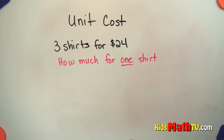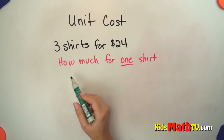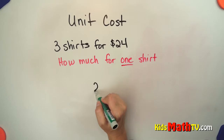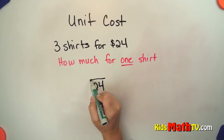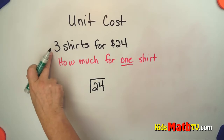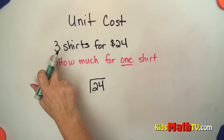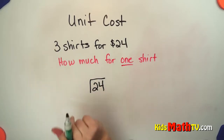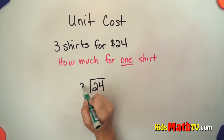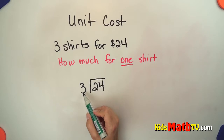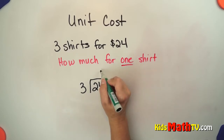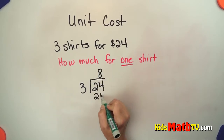In order to do that, you simply take your total — $24 for all of the shirts — and you're going to divide that by the number of shirts. You want to find out how much for each shirt, so divide it by three. Three shirts for $24. How many threes are in 24? There are eight. Eight times three is 24.